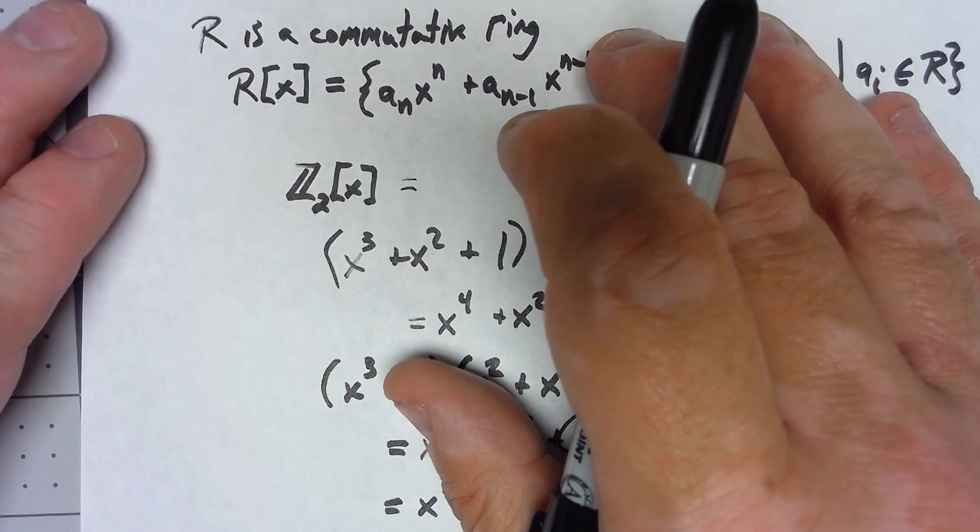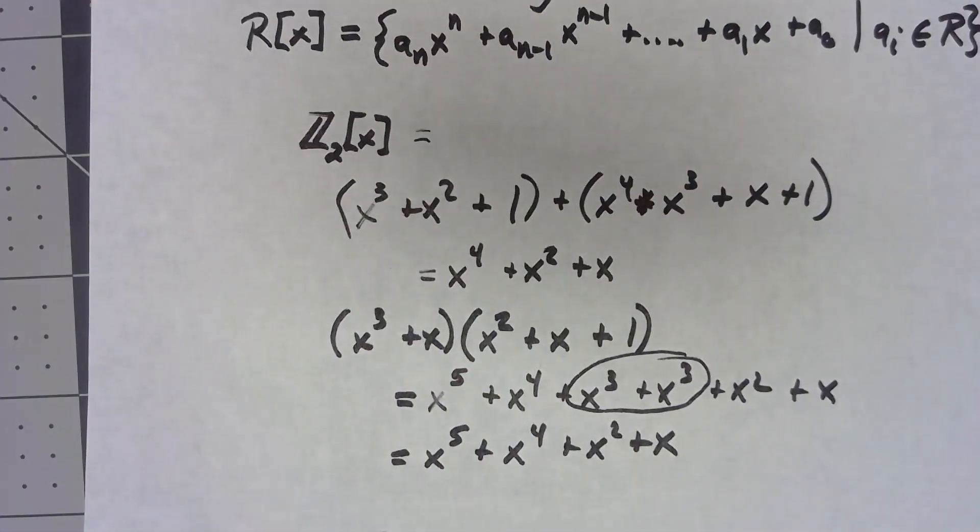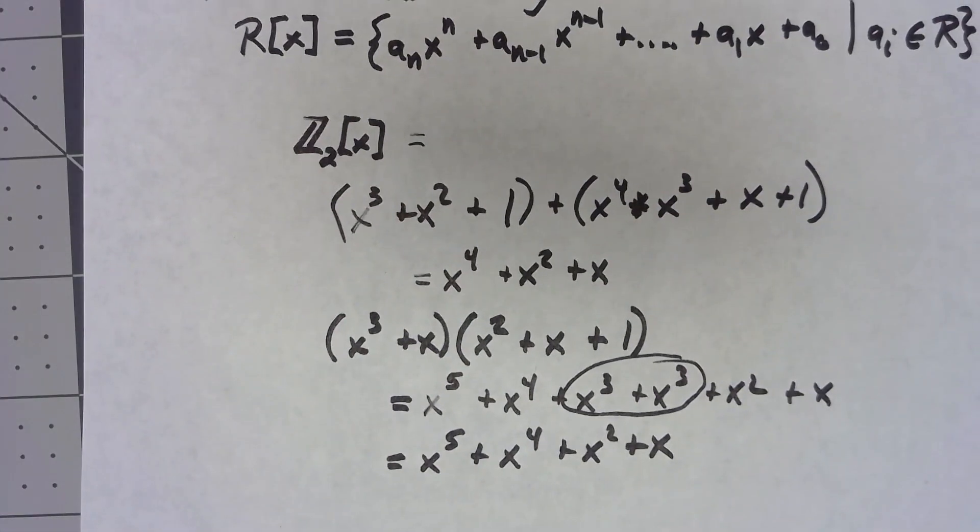So again, any commutative ring that we start with, we can go ahead and create these polynomials from it, and they work pretty much the way we would expect.